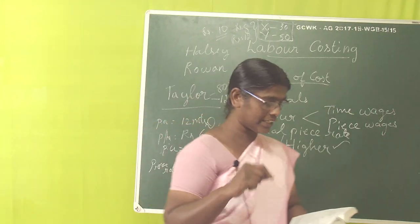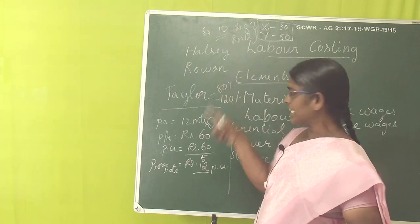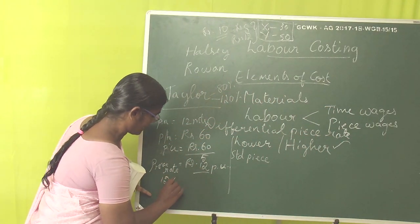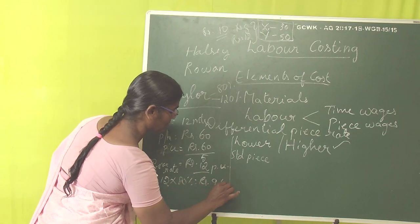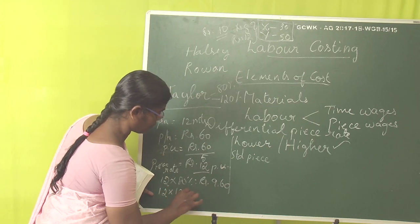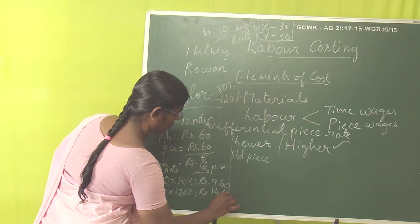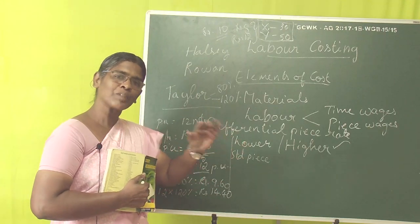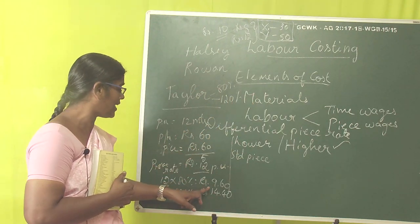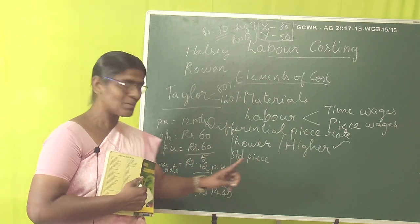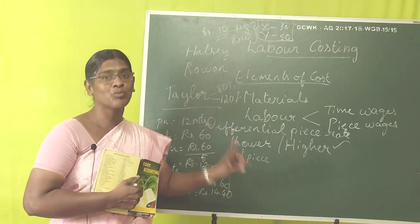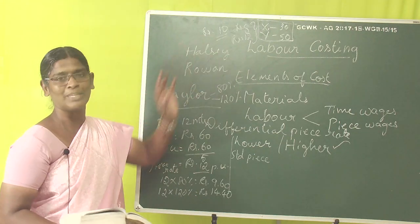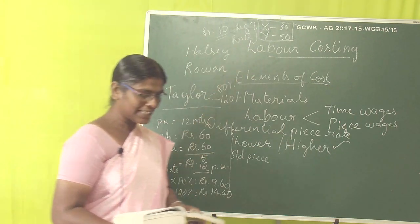Now we find the differential piece rates. The ordinary piece rate is rupees 12. At 80%, the lower differential piece rate = rupees 9.60 per piece. At 120%, the higher differential piece rate = rupees 14.40 per piece. Worker X produced only 30 units — below the standard of 40 — so he gets rupees 9.60 per piece. Worker Y produced 50 units — above standard — so he gets rupees 14.40 per piece.